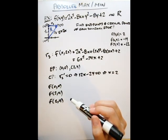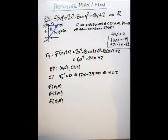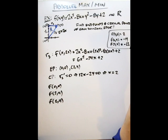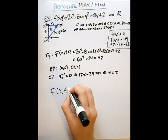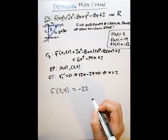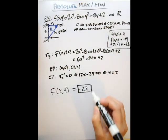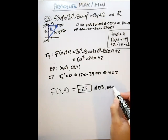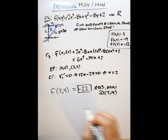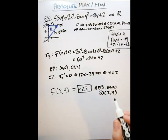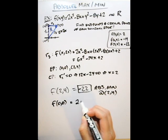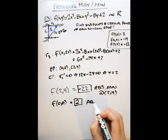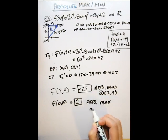These three points — (0,0), (0,4), and (2,4) — represent all possibilities for absolute max or minimum values. The smallest function value is f(2,4) = −22, so this is the absolute minimum. f(0,0) = 2 is the largest value, so we have an absolute maximum at (0,0) with value 2, and an absolute minimum at (2,4) with value −22 on the region R.